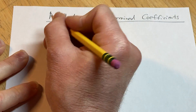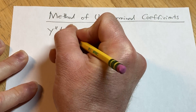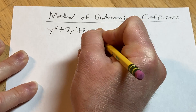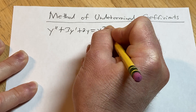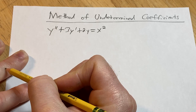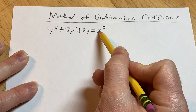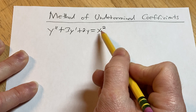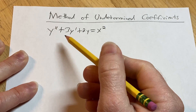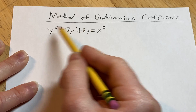Let's pick an easy example. We have y double prime plus 3y prime plus 2y equals x squared. This is a linear differential equation. The coefficients are constant and it is non-homogeneous — that's because the right-hand side is not zero. If it were equal to zero, you'd say it's homogeneous.